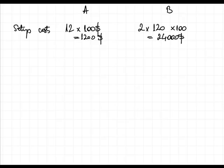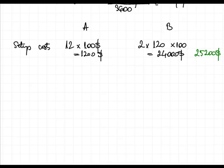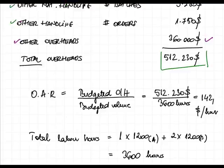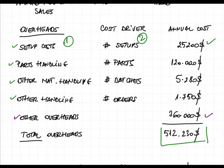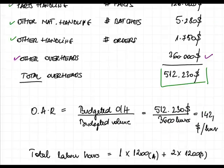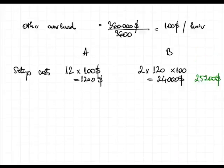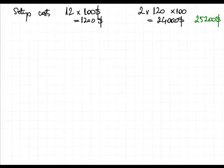Note that the total of the two allocated costs will be $25,200. That is exactly the amount that we started with to allocate. It has to always be the same — we are just allocating overheads according to a different method, so the total shall always be the same. Let's keep going to parts handling.